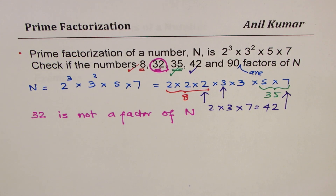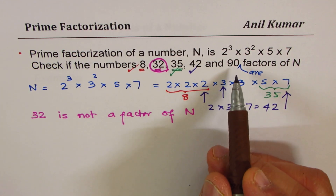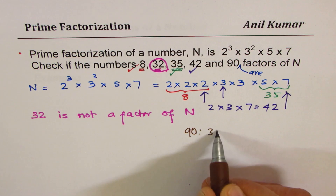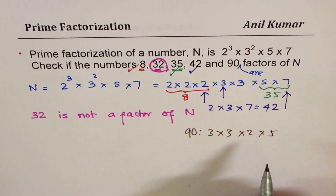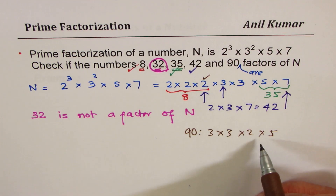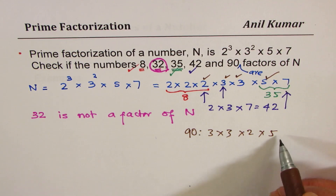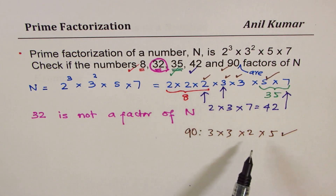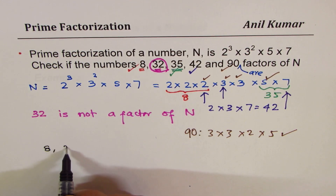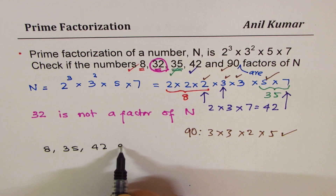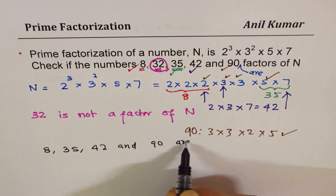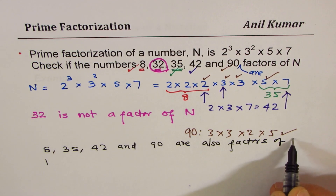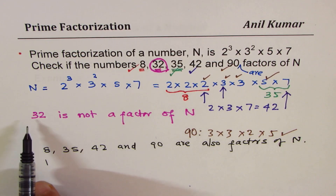How about 90? To get 90, I need 9 times 10, which means 3 times 3 times 2 times 5. Do I have these numbers? I have a 2, I have a 5, and I have two 3's. So 90 is also a factor. So the answer is: 8, 35, 42, and 90 are factors of n, but 32 is not a factor.